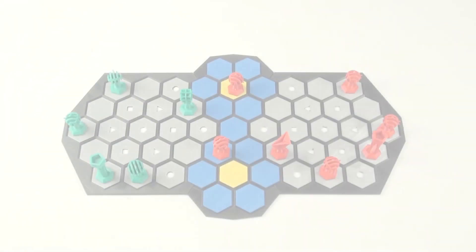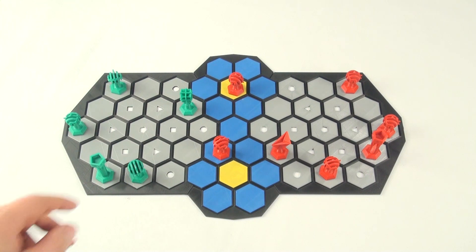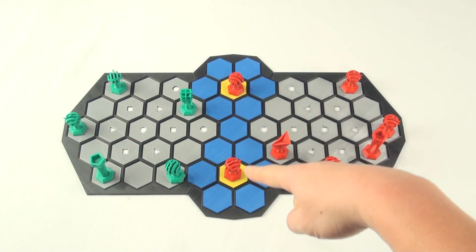The game continues on like this until red takes both objective hexes and green is left unable to retake on their turn. Red is victorious and the glory goes to the victor.